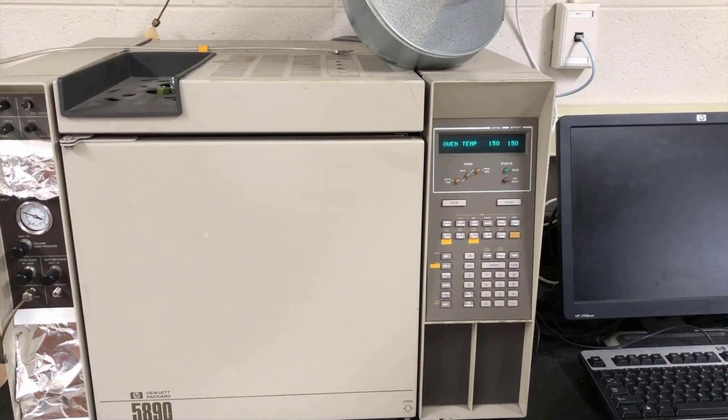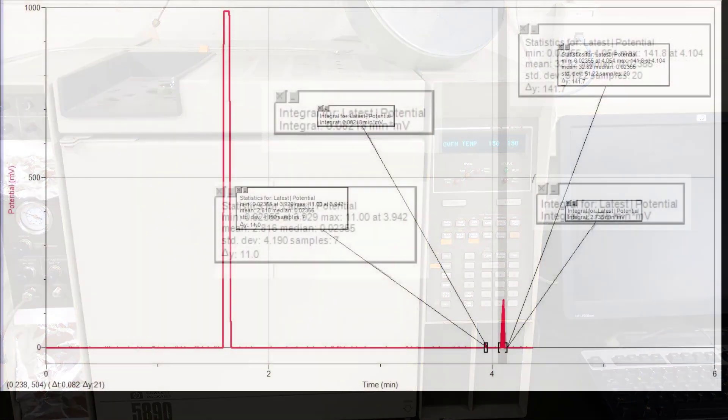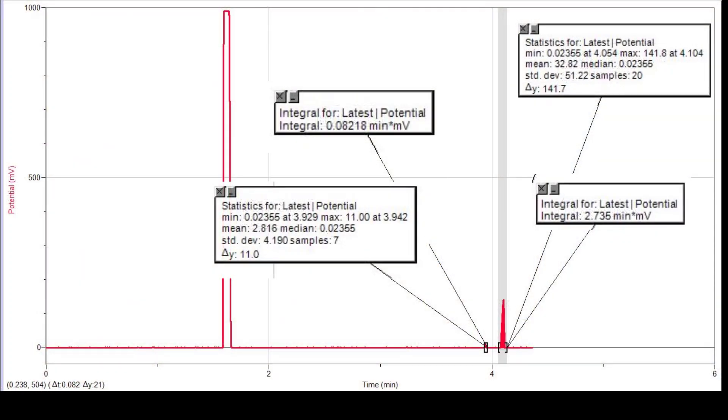Finally in this experiment, we'll be analyzing the product mixture by GC, gas chromatography. This is a technique that was described extensively in a previous video as well, so you should check that video out for reference if you haven't seen it or don't remember how to do it. I'm just going to provide the data here, which is a chromatogram of the reaction mixture with peaks labeled with retention time and integration value shown.